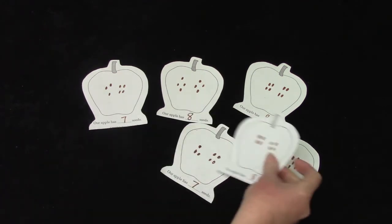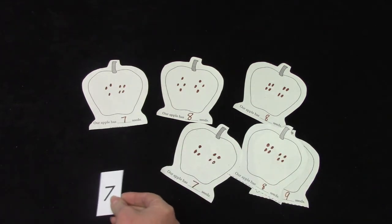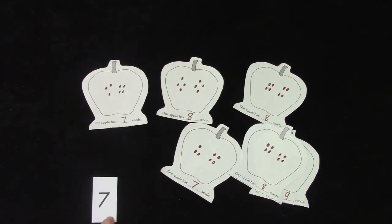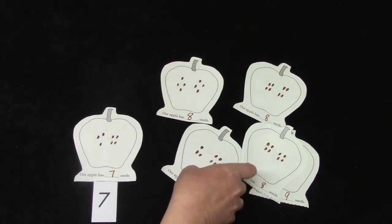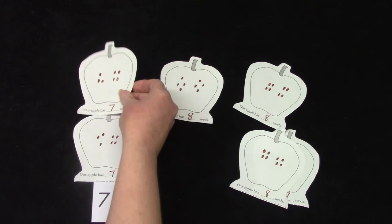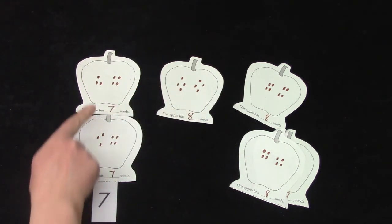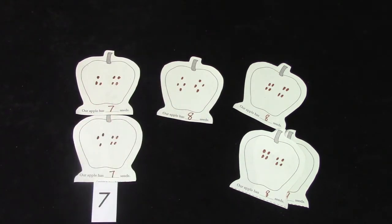I think I am going to start with how many have seven. Let's see, this one had seven. And so did this one. So I have one, two apples that had seven seeds.